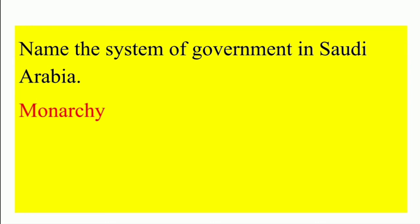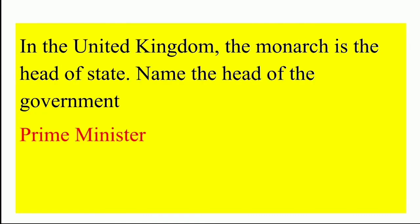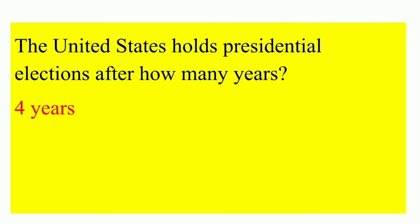The king is the leader. In the United Kingdom, the monarch is the head of the state. Name the head of the government in the United Kingdom. The monarch is the head of the state and the head of the government is the Prime Minister. So you need to remember: the head of the state in the United Kingdom is the monarch, whereas the head of government is the Prime Minister.